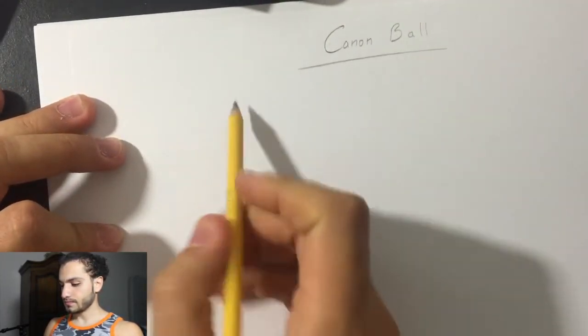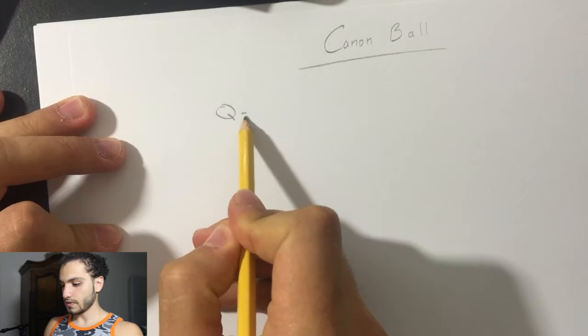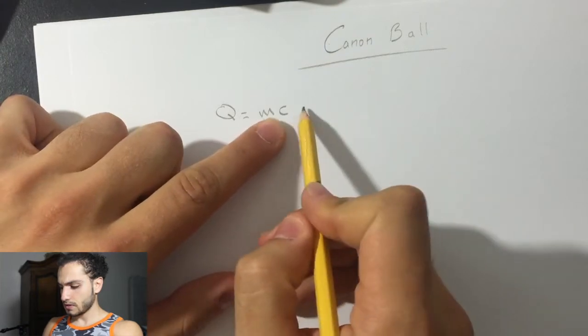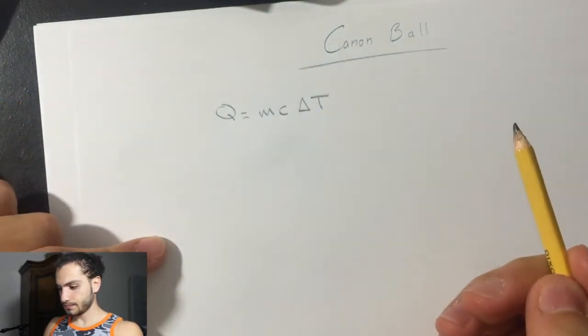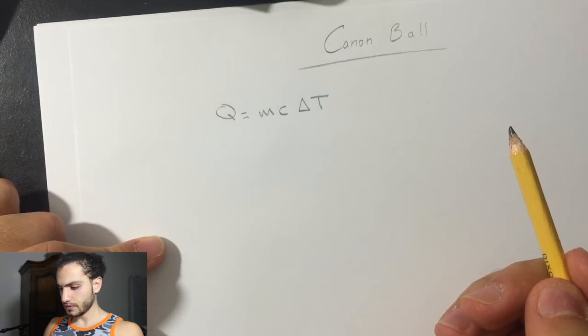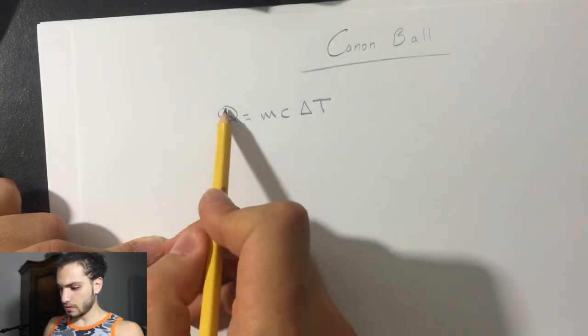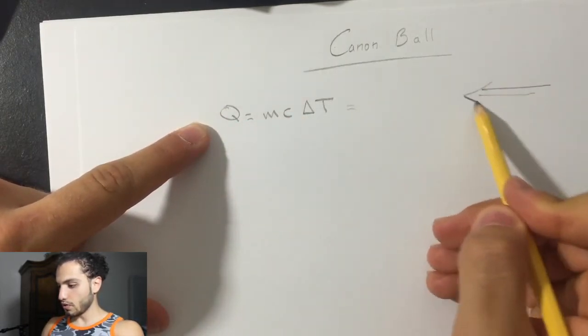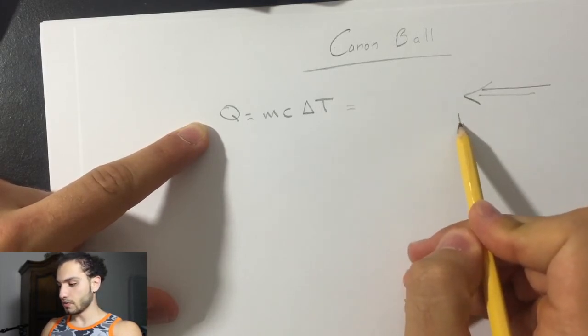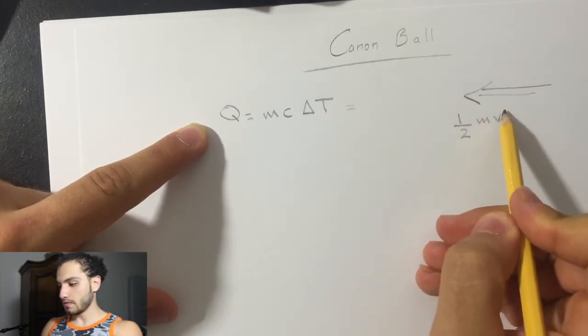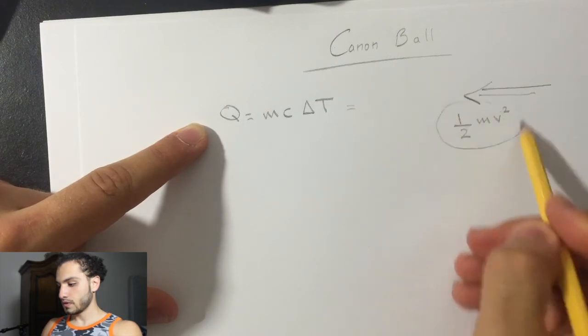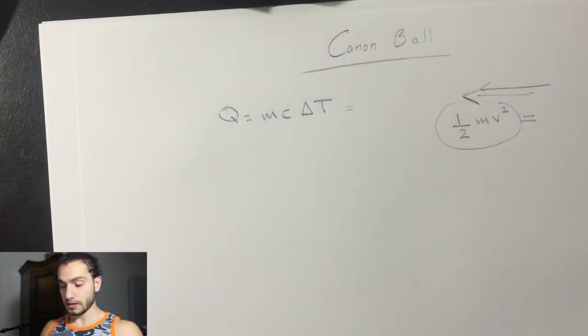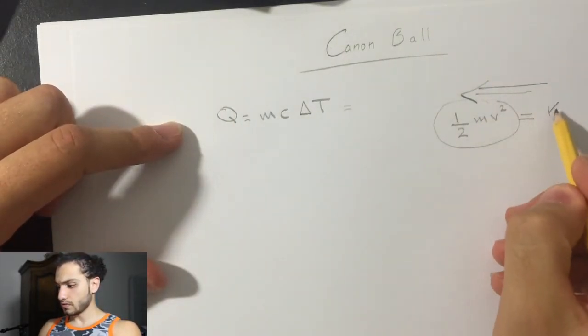So Q equals mass times the specific heat times delta T. And then, before when the ball is flying to the wall, it has kinetic energy, and this kinetic energy is equal to half mv squared. So this kinetic energy, it told us that all of it transferred into heat before it melts. So this is called KE.